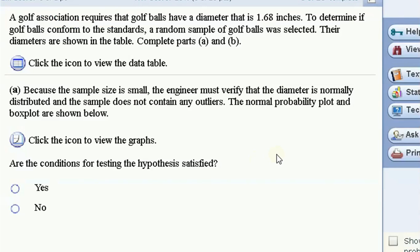All right, a golf association requires golf balls have a diameter that is 1.68 inches. To determine if golf balls conform to the standards, a random sample of golf balls was selected. Their diameters are shown in the table.